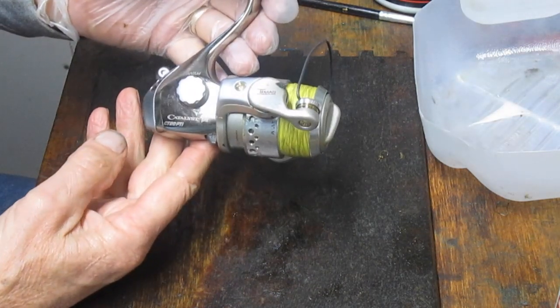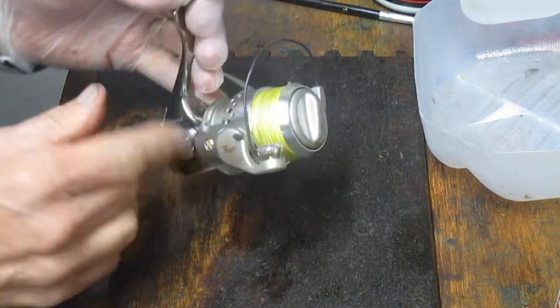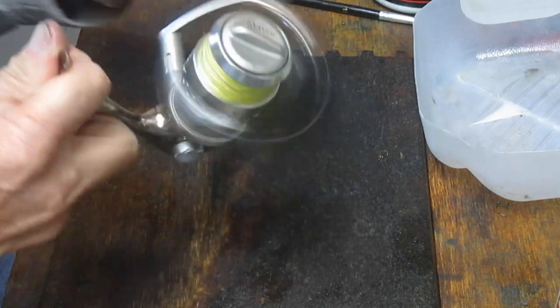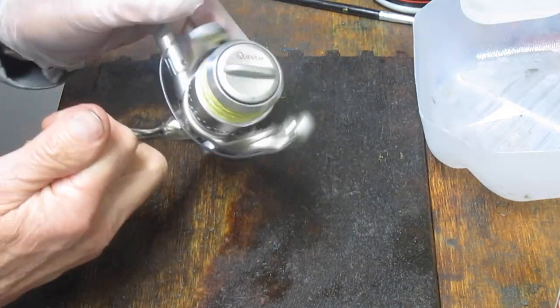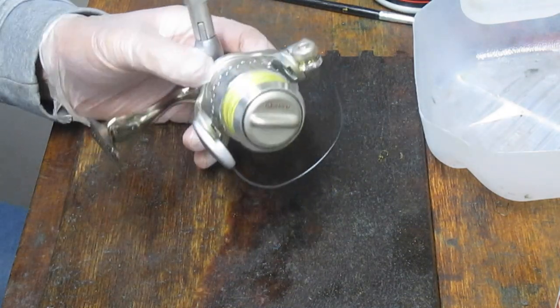This is a Quantum Catalyst PTI, the CT20, a 20 size reel. It appears to be a nice reel with eight ball bearings, very smooth operation. This was part of those flea market pandemic project previews that I did.